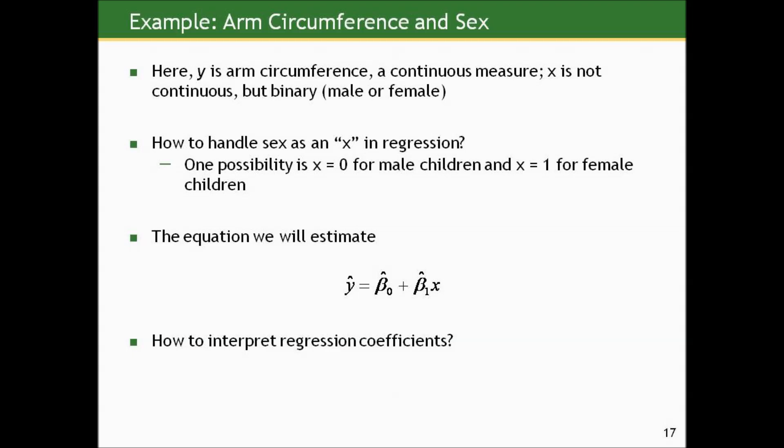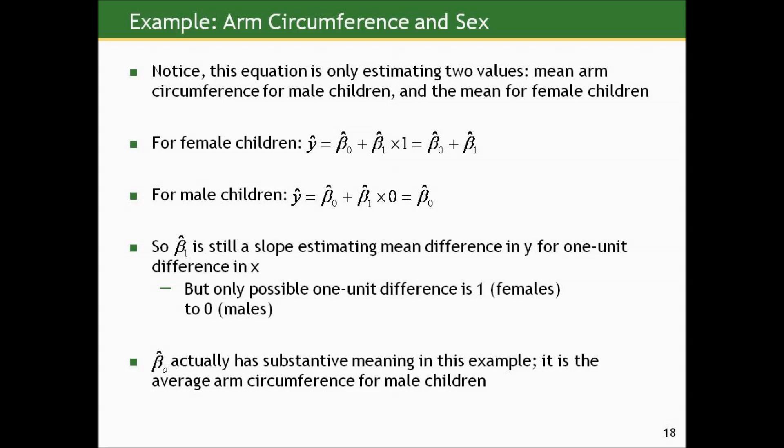Our outcome is arm circumference, a continuous measure, but X here is binary — male or female. We can handle this in regression by making X equal to zero for male children and X equal to one for female children. This is arbitrary — we could have done the opposite. The equation Y-hat equals beta-naught-hat plus beta-one-hat times X then only estimates two values: the mean for males (X=0) gives us just the intercept, while the mean for females (X=1) gives the intercept plus the slope.